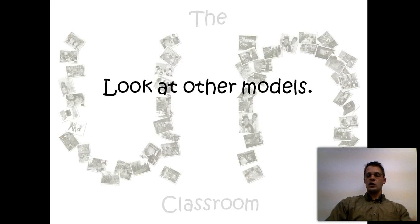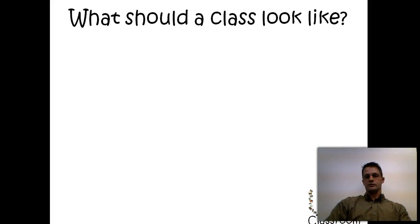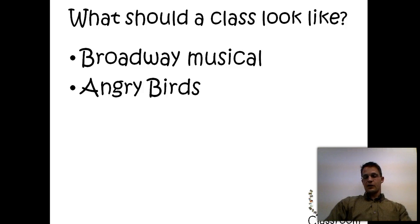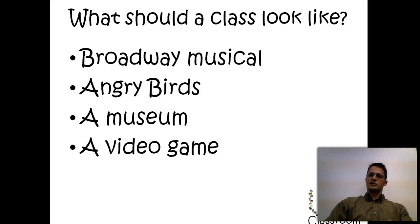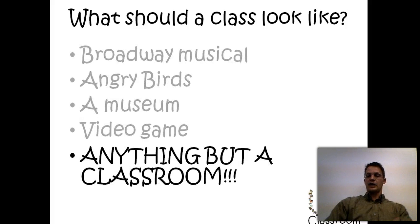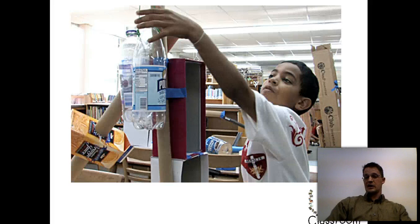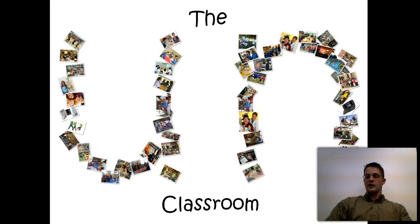The un-classroom asks us to look at other models. If we couldn't lecture or make students read all the time, what would we be forced to do? If we look at iPods and video games, these are the things kids say they enjoy the most — and they're also sound instructional and learning principles. So what should a class look like? Joe says a Broadway musical. Mad Scientist Paul from Montana said Angry Birds. The Kansas City teacher said a museum — see it, hear it, touch it, feel it, build it. I've talked to folks about a video game. It doesn't matter as much which model you choose, as long as you're focusing on anything but a traditional classroom. This should be the end of lecture as we know it — we know it doesn't engage students and doesn't make content stick. Classrooms could look like so many things, but don't let them look like the traditional setup.